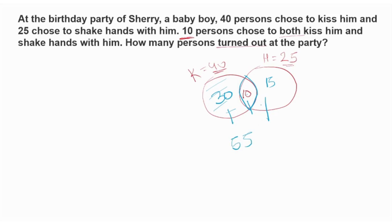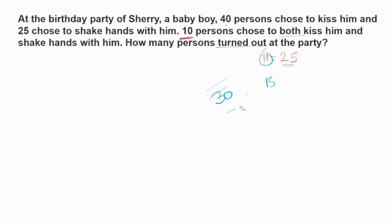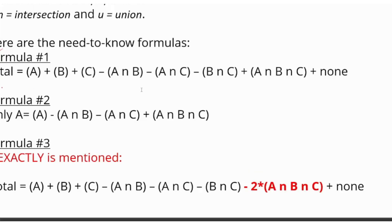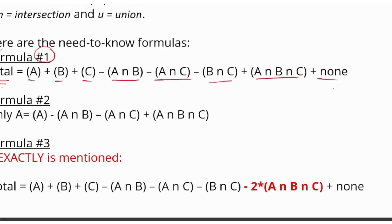This is very time consuming if you don't use a formula. This is the formula: Total = A + B + C minus A∩B minus A∩C minus B∩C plus the 3-common plus none.